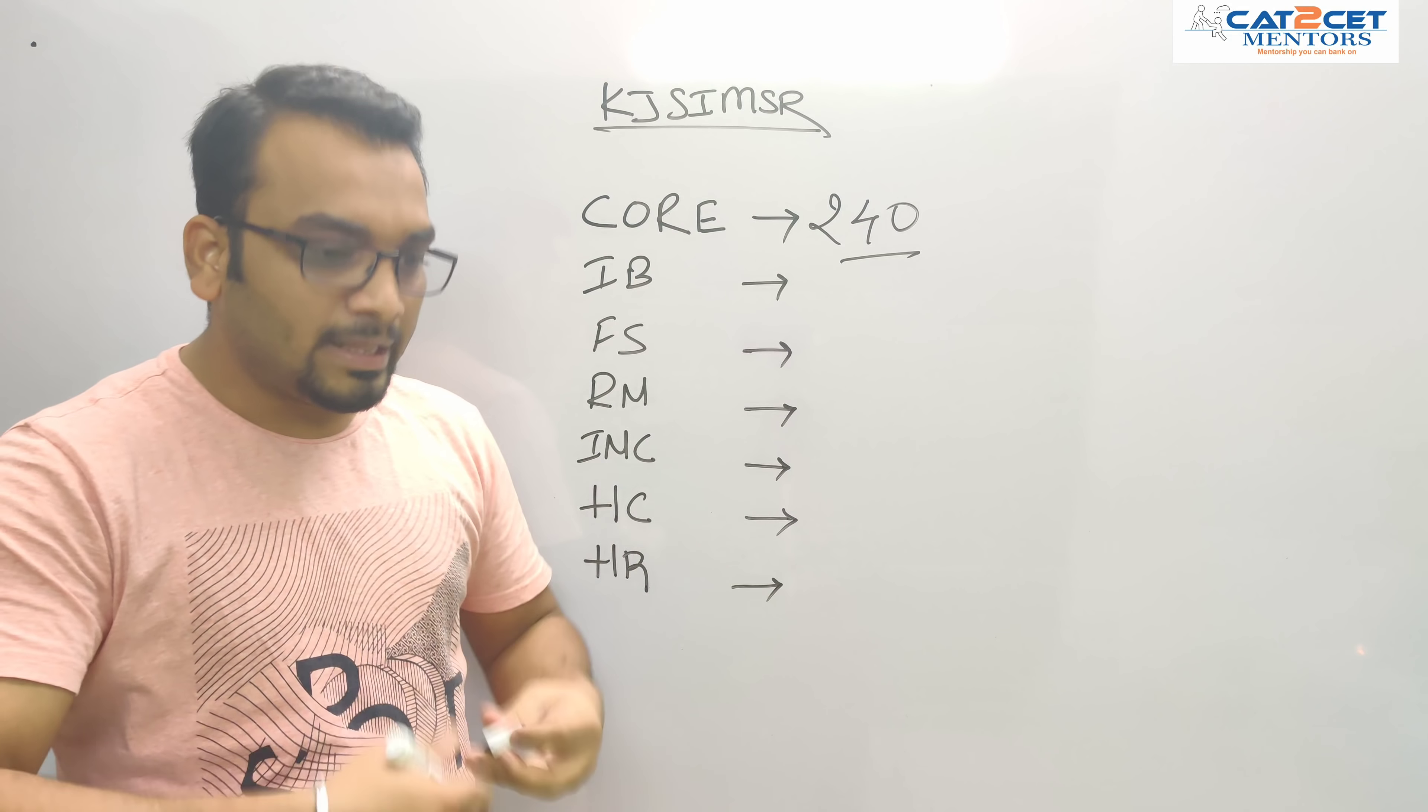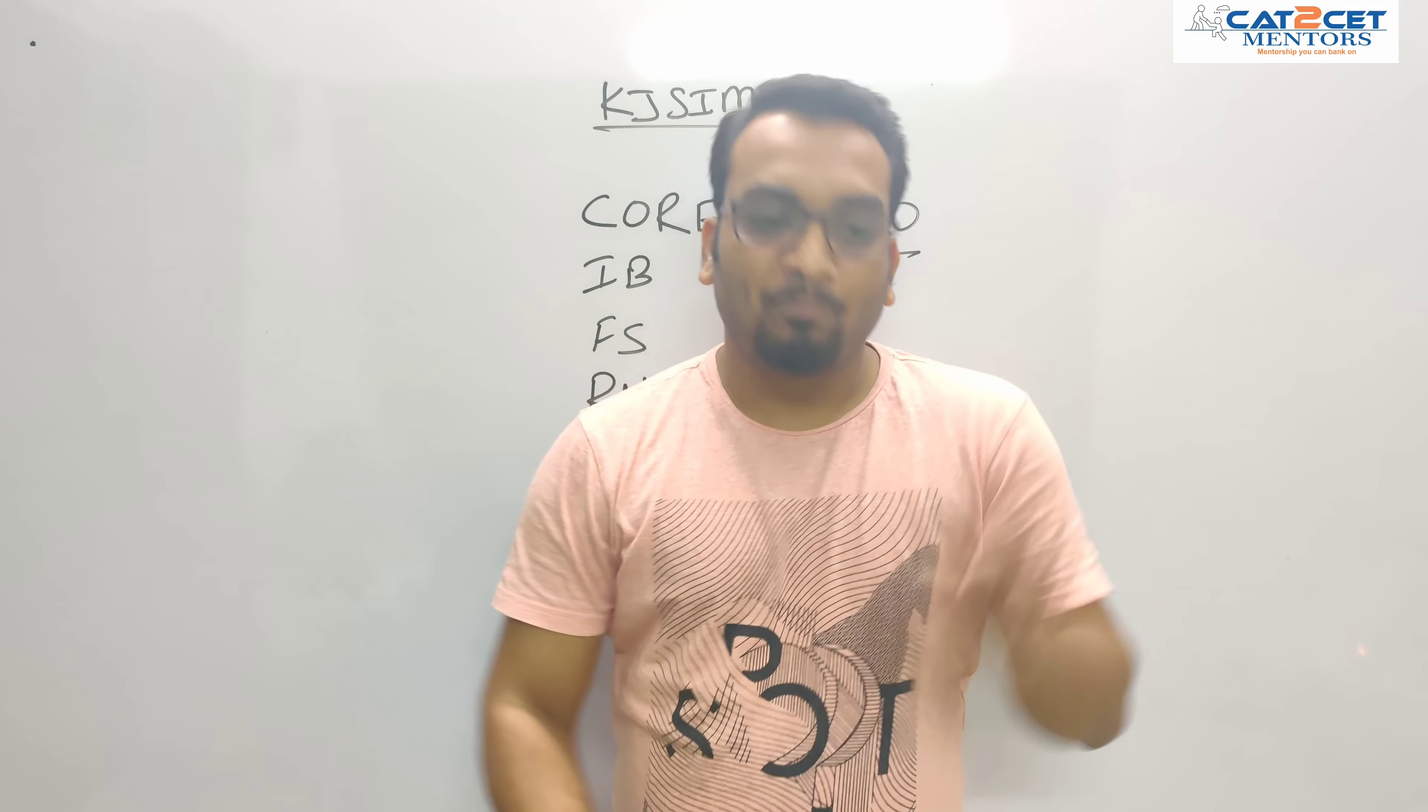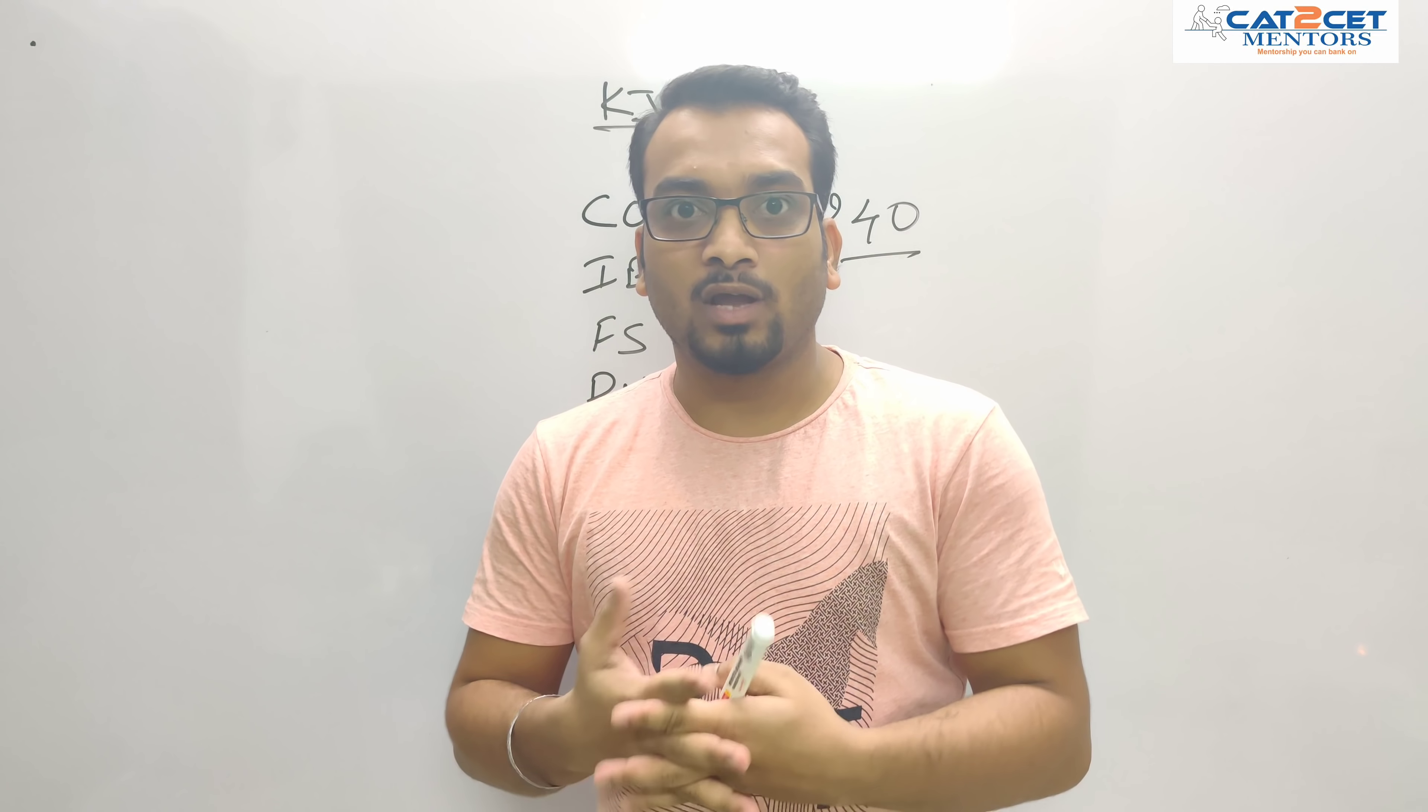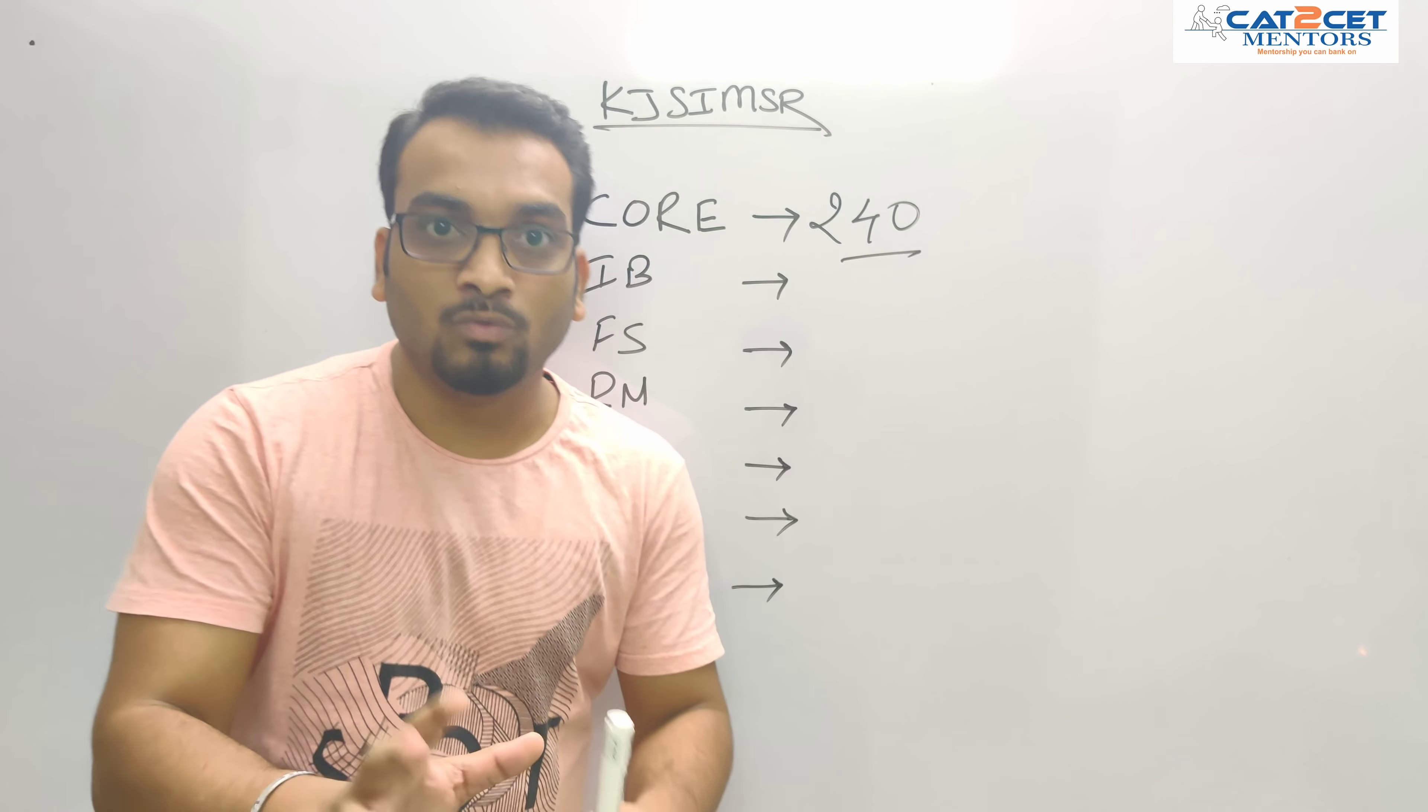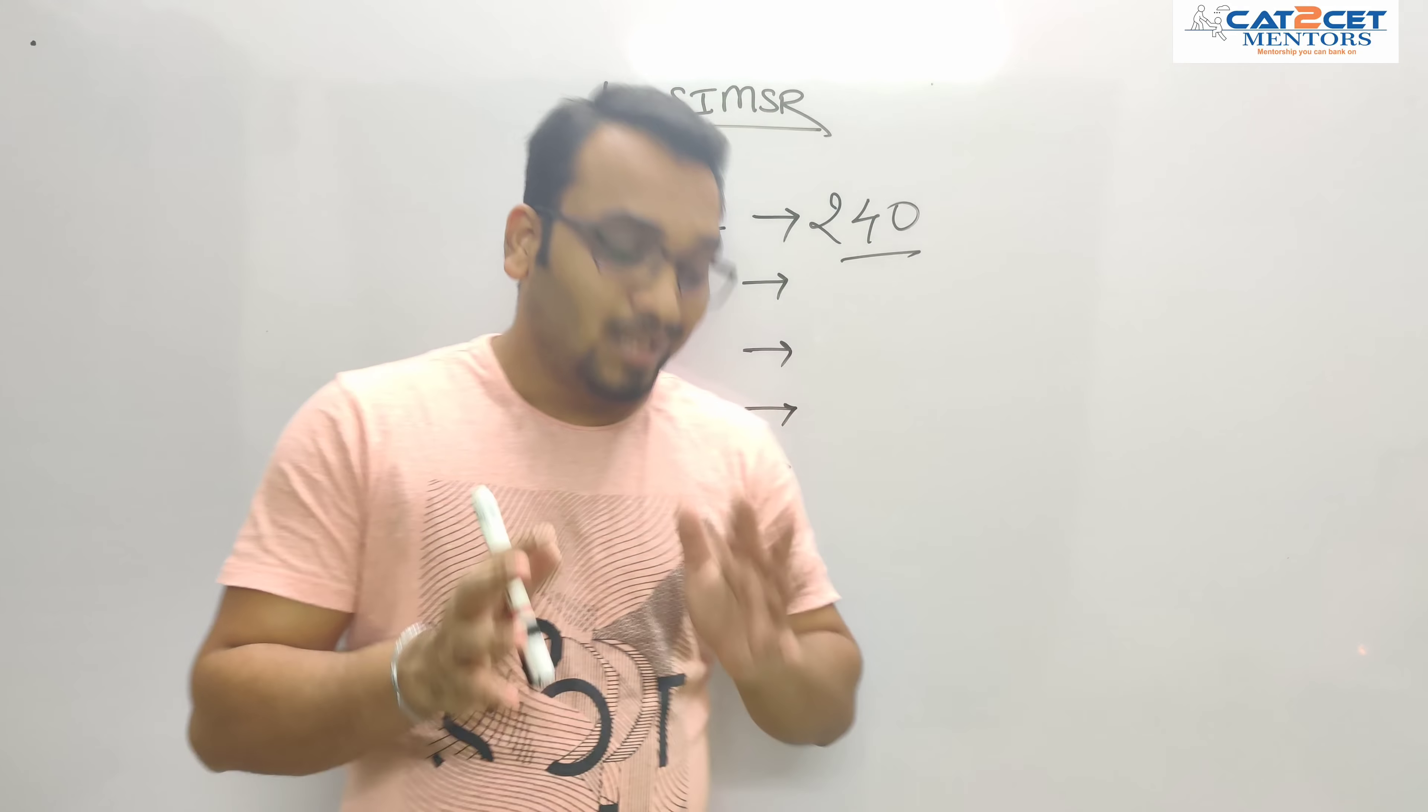Let's talk about IB. If you're somebody who really wants to do a specialization in international business, to be very honest, technically speaking, international business is not a specialization. It's one of the sub domains of management which cuts through four main verticals of management: marketing, finance, HR and operations. KJ Somaiya has IB. If you want to go for international business, you can go for it.